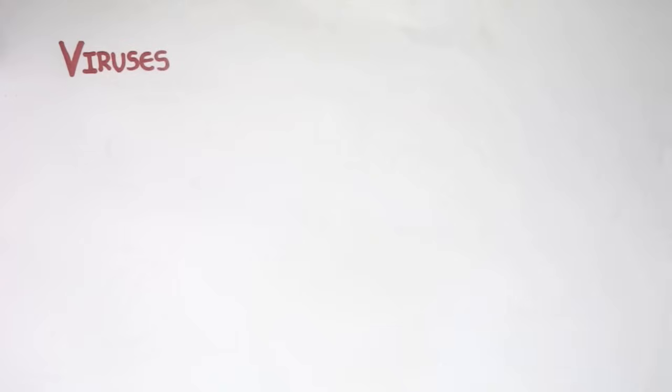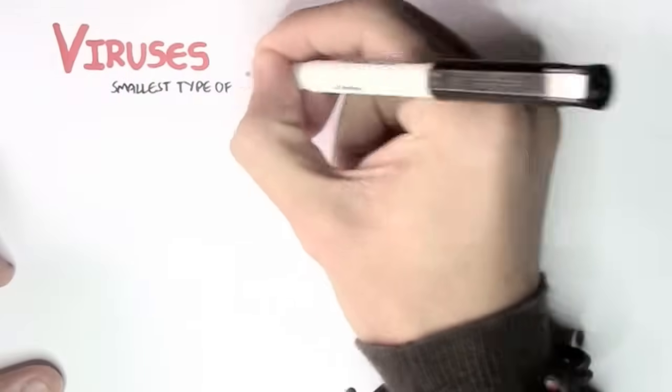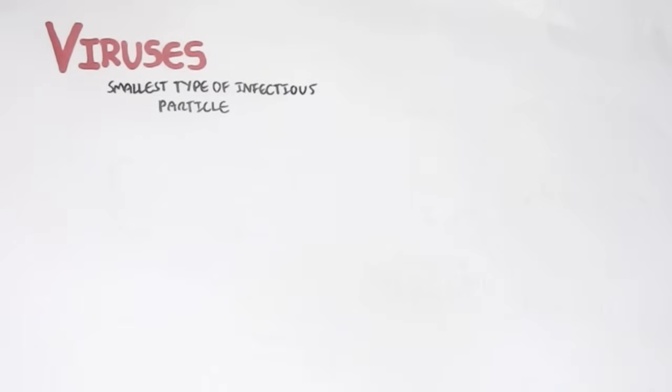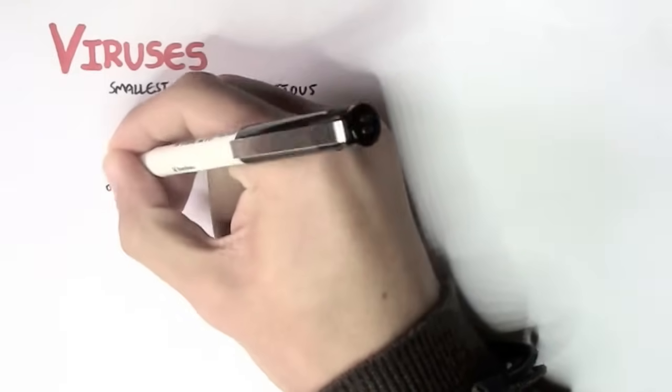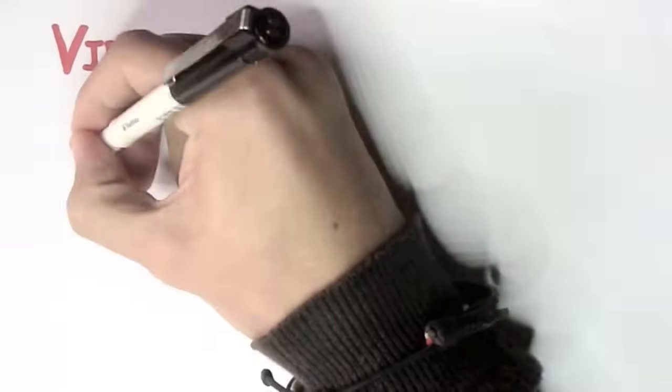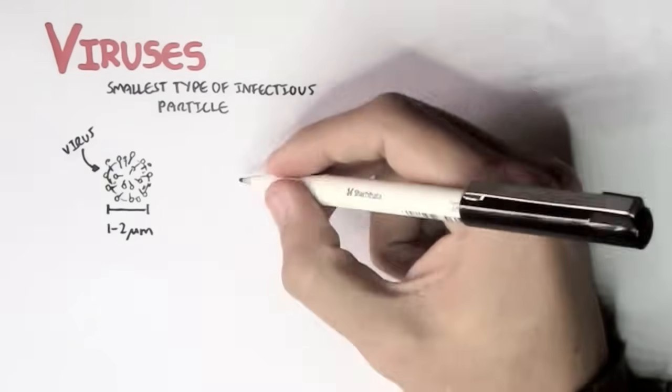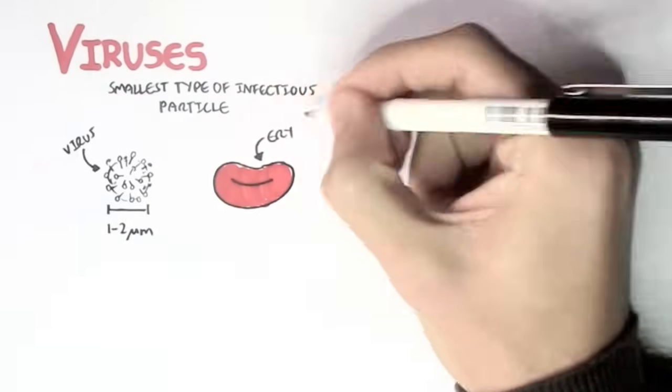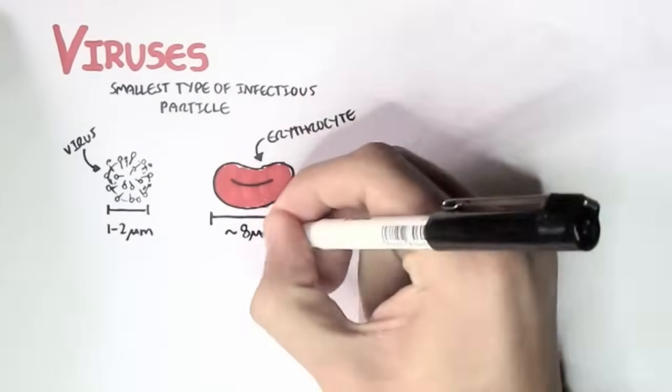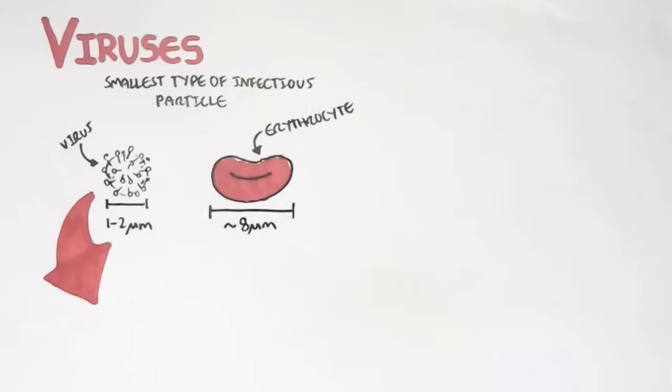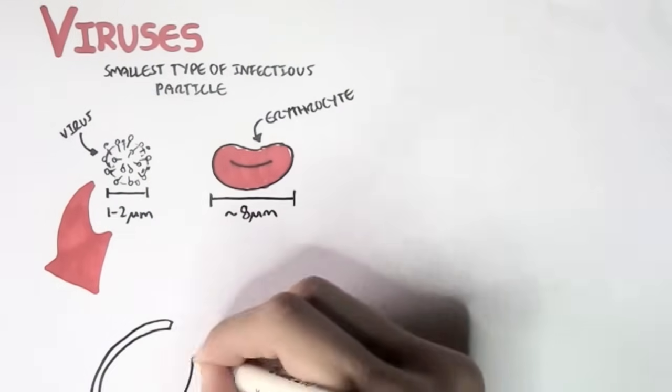Viruses are the smallest type of infectious particle. This means that compared to a bacteria, for example, viruses are much smaller. A typical size of a virus is about 100 nanometers in diameter, but it can range between 10 nanometers to about 300. An erythrocyte, our red blood cells, are about 8 micrometers in diameter, which is about 100 times the size of a virus.